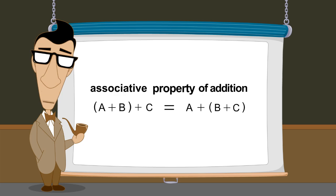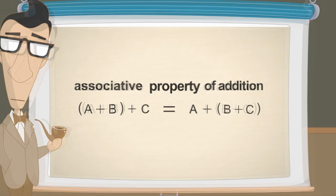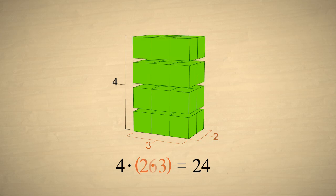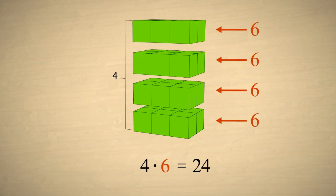Does this also apply to multiplication? Let's start with our stack of 24 boxes, and group them in different ways before multiplying. For instance, if we group the 2 and the 3, we get four groups of 6, which is still equal to 24.